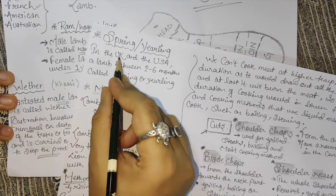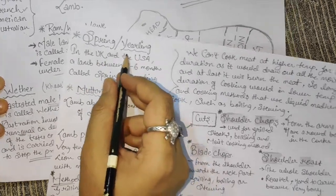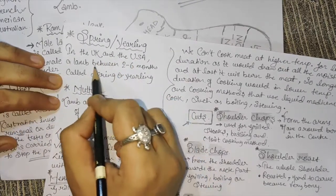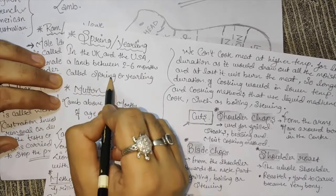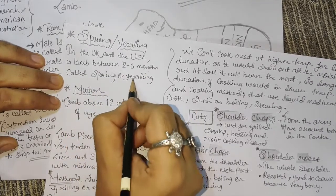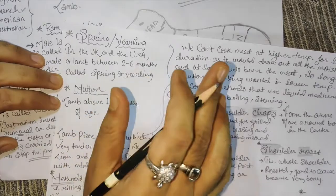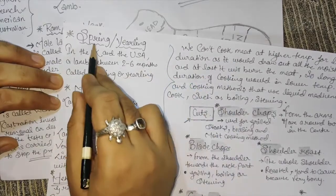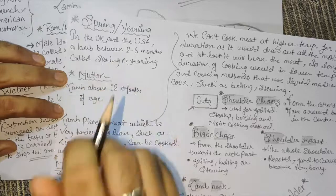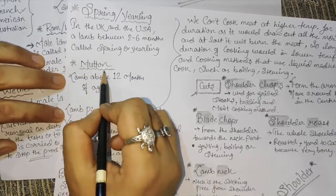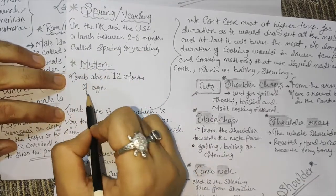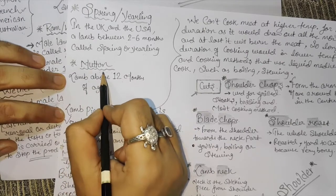Spring and yearling: in the UK and US, a lamb between 2 to 6 months is called a spring lamb or yearling. And mutton refers to a lamb above 12 months of age.